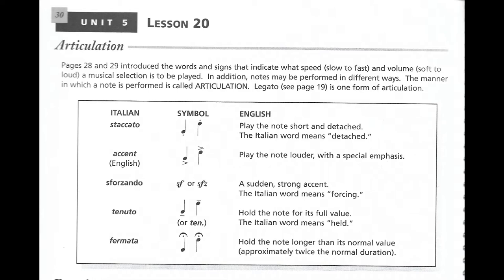In this box below, we have a list of some articulation symbols, their Italian meanings, and their English counterparts. Staccato — when there's a little dot above or below a note — means that you play the note very quickly. Play the note short and detached. The Italian word means detached.